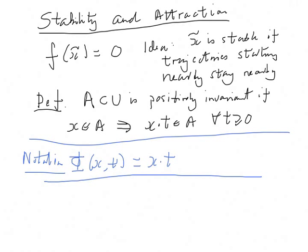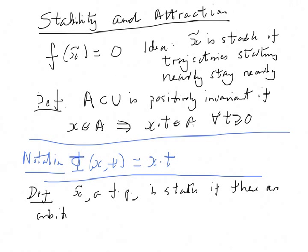So a second definition, and a key definition about stability, is that a fixed point x tilde is stable if there are arbitrarily small neighborhoods of x tilde that are positively invariant.